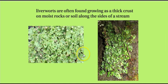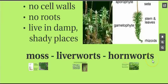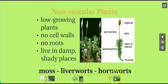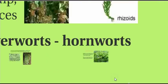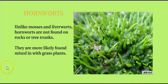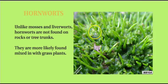Liverworts can grow right into the soil, but they look like this — they are liverworts. There are also things called hornworts, and these are a little bit different. They do not have vascular tissue, just like the other two examples, but they're different because they don't grow on rocks or tree trunks. They're more likely to be found mixed in with grass, and you can see these are the little hornwort structures here.